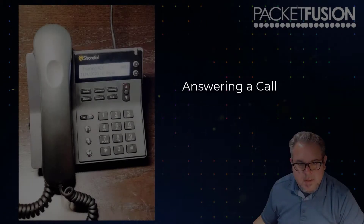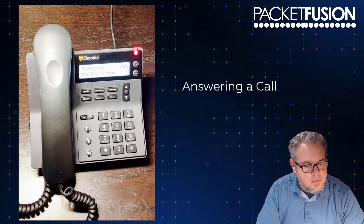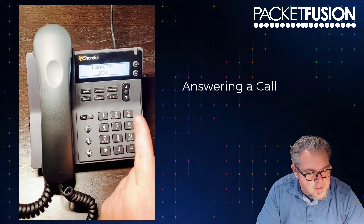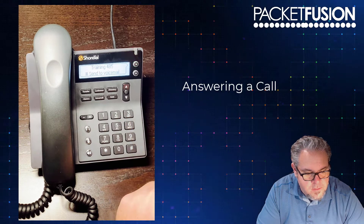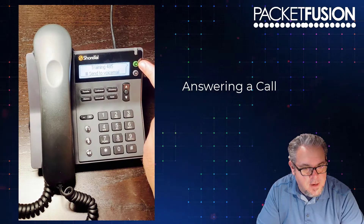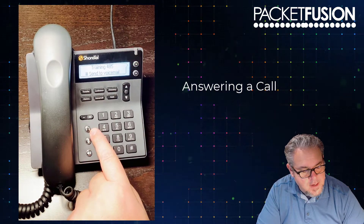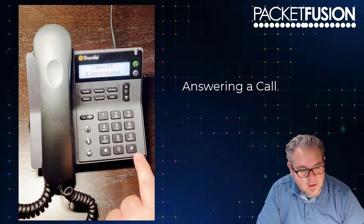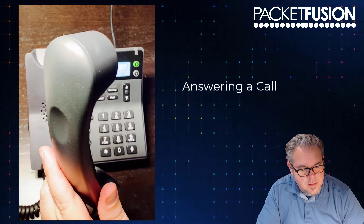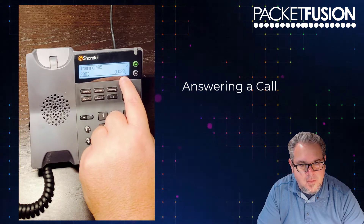Answering a call is just as simple. When I'm getting a call, on the screen I will see the name of the person who's calling me and their extension. To answer that call, I can do a number of things — I can either hit the line appearance key and pick up on my default audio path, hit the speaker or the headset key to answer on those audio paths, or hit the pound key to send that caller right to voicemail. Once I pick up, I have a call connected with a timer showing the duration in the bottom right.